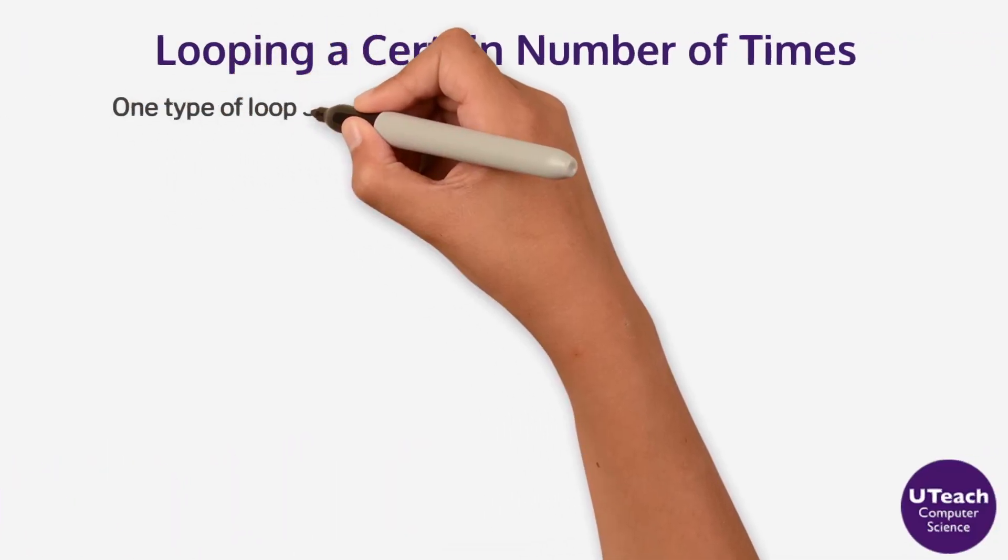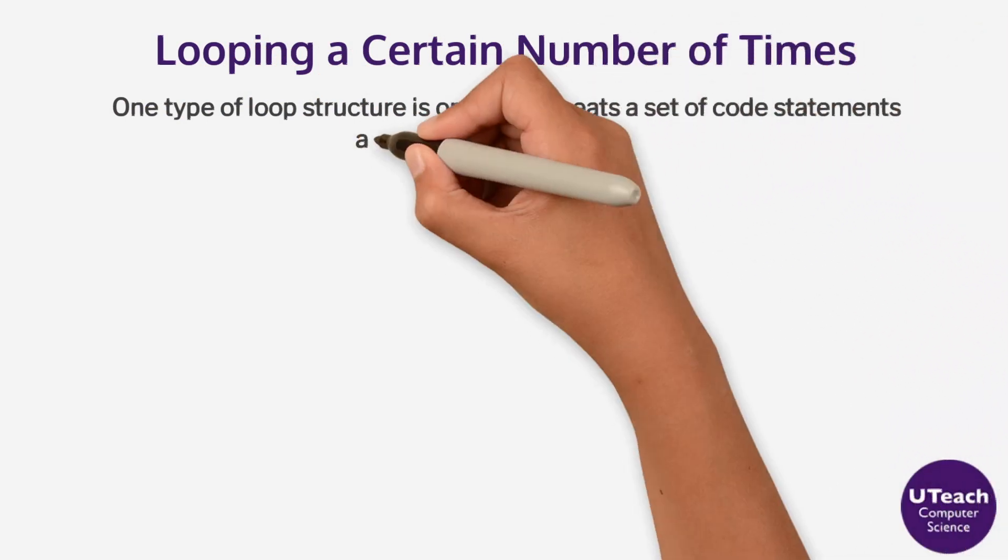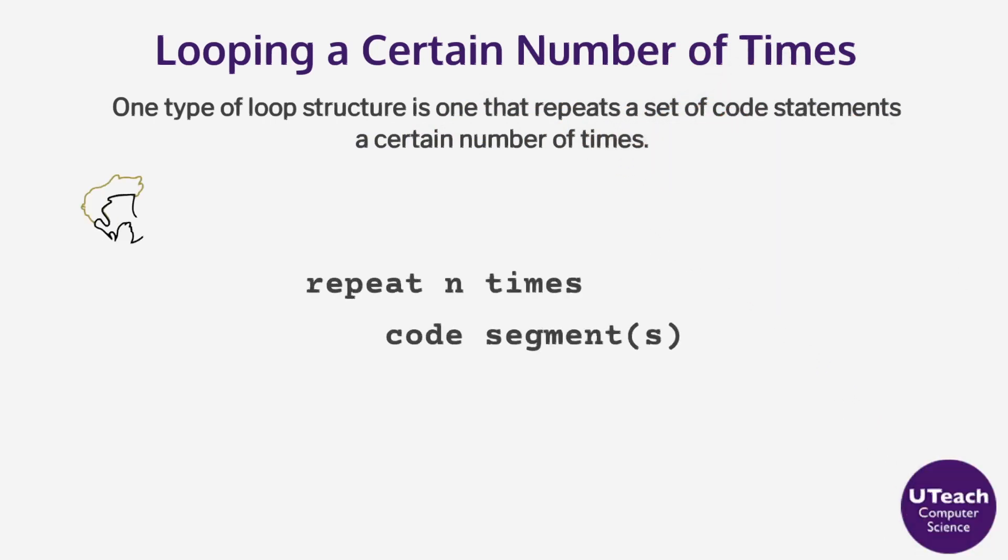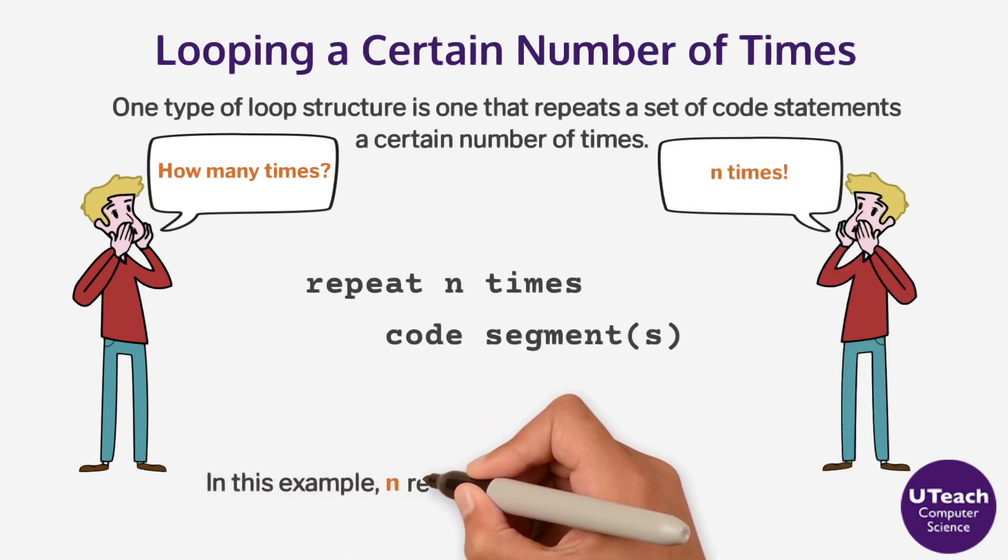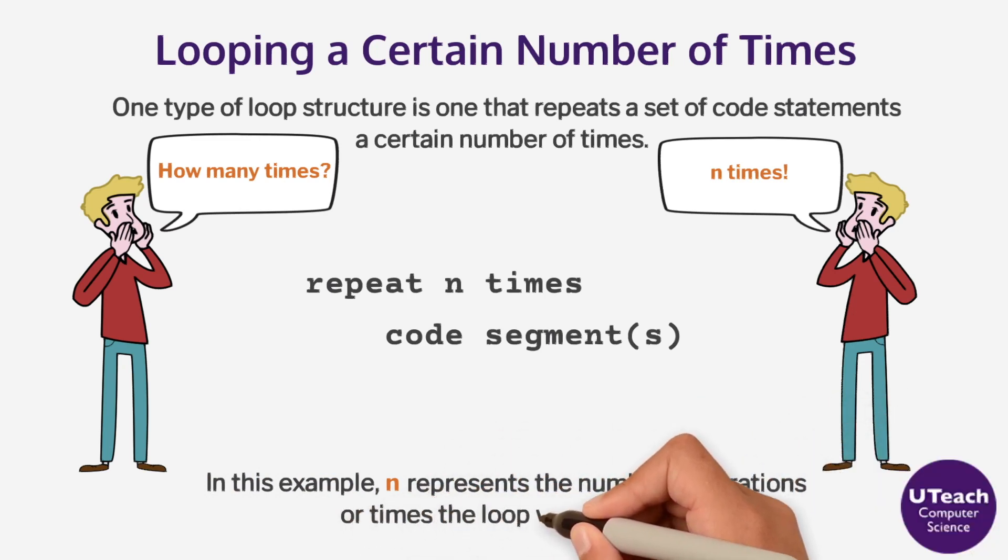One type of loop structure is one that repeats a set of code statements a certain number of times. Both Scratch and the AP CSP pseudocode have a repeat n times loop. In this example, n represents the number of iterations or times the loop will execute.